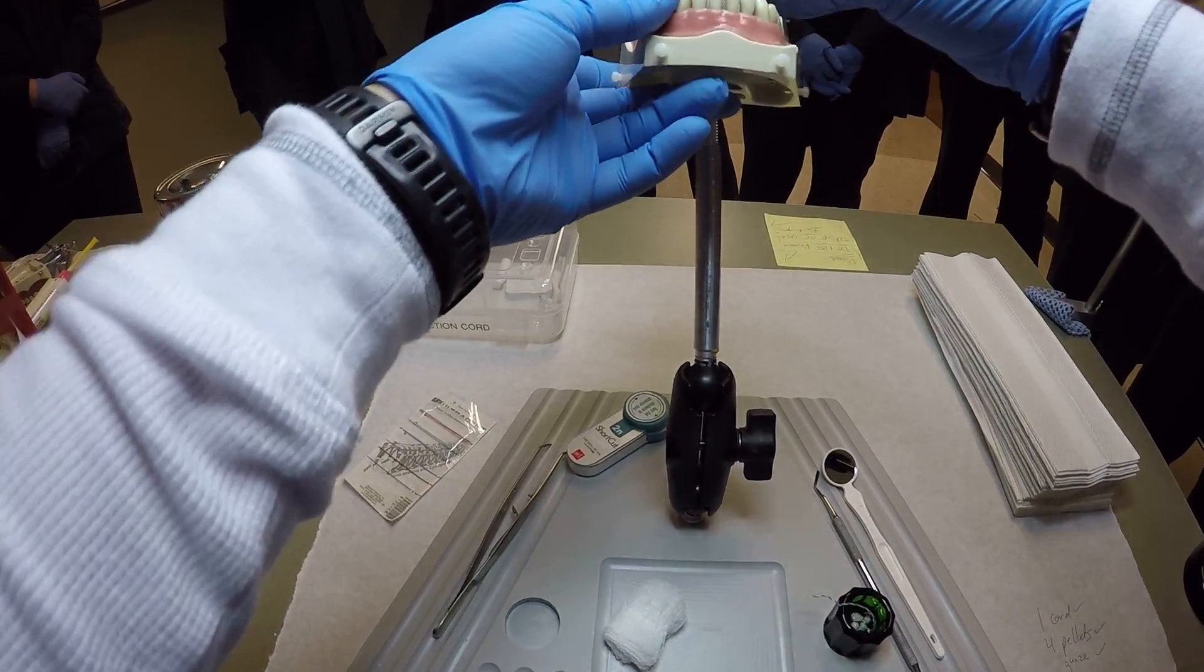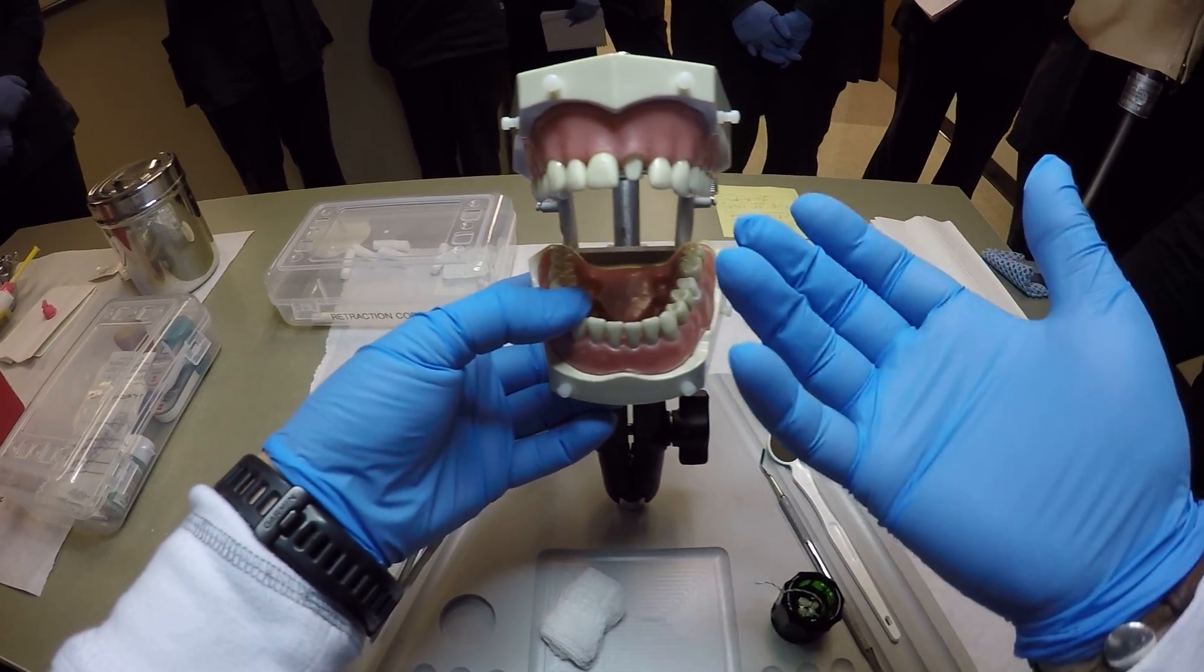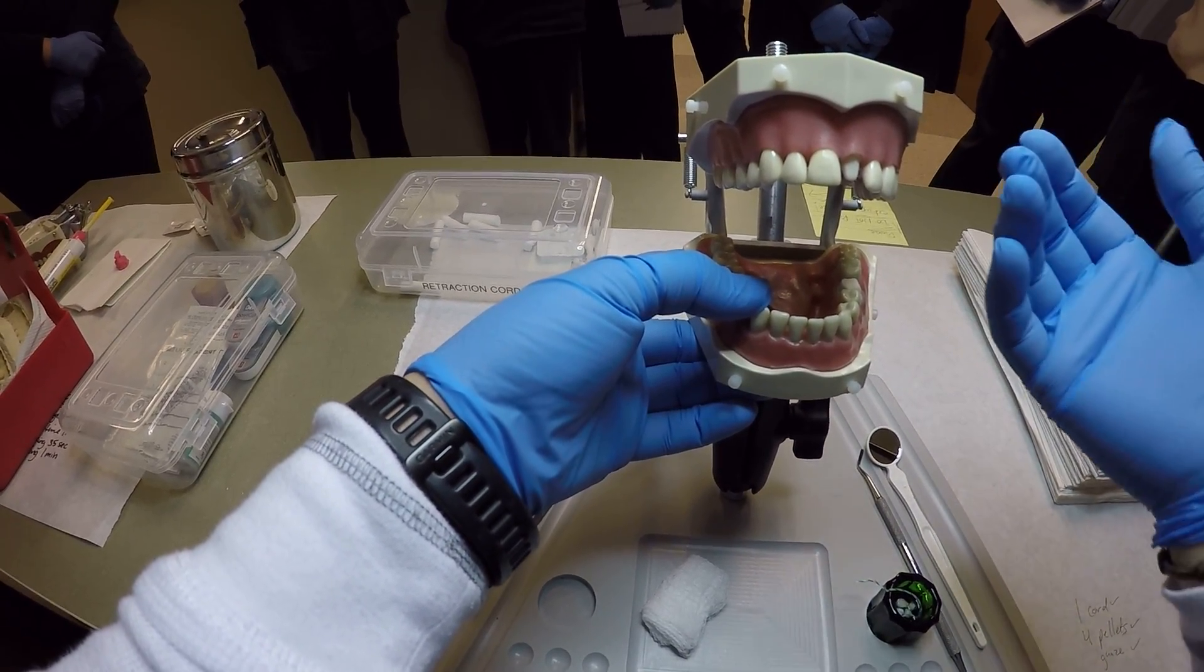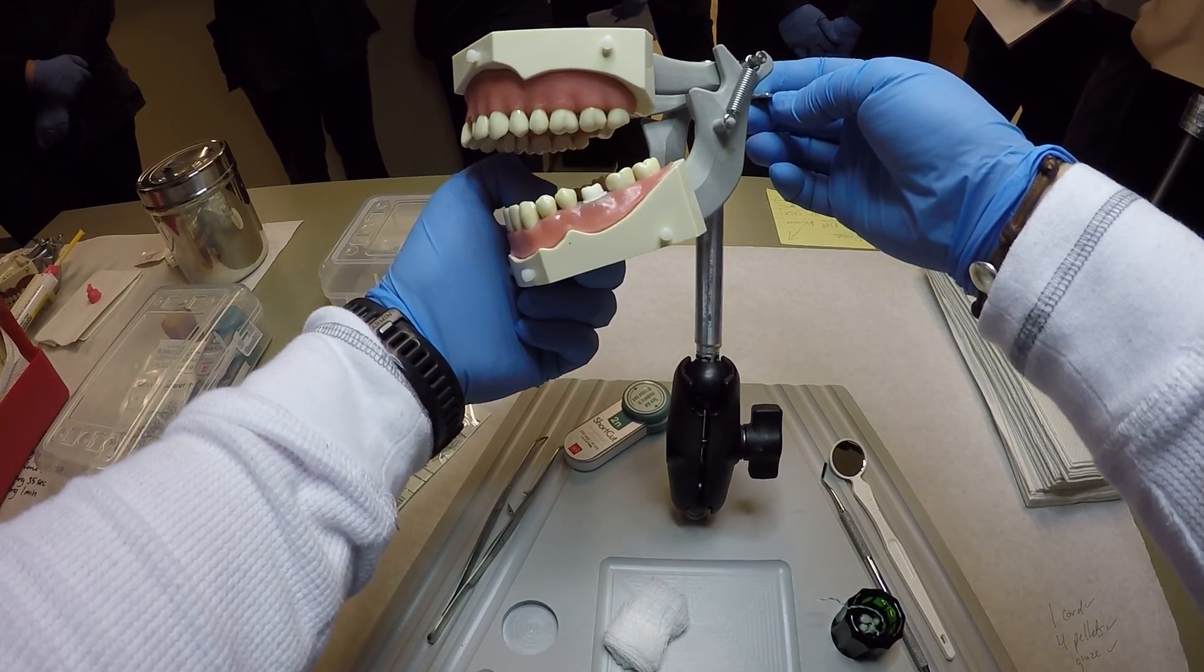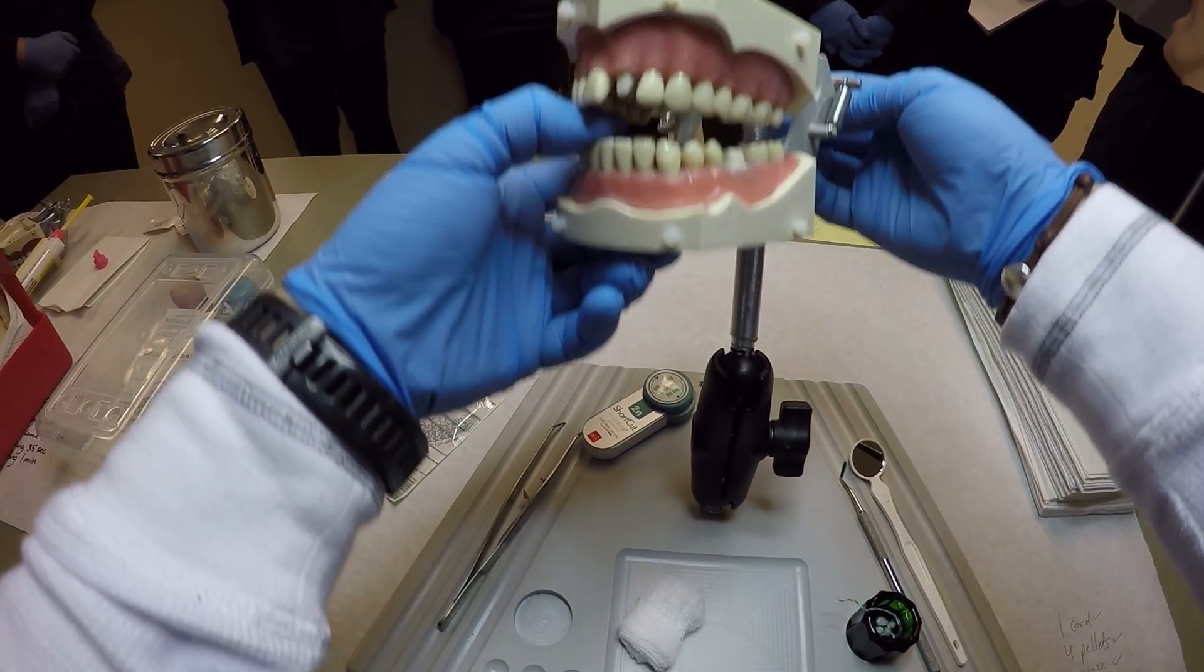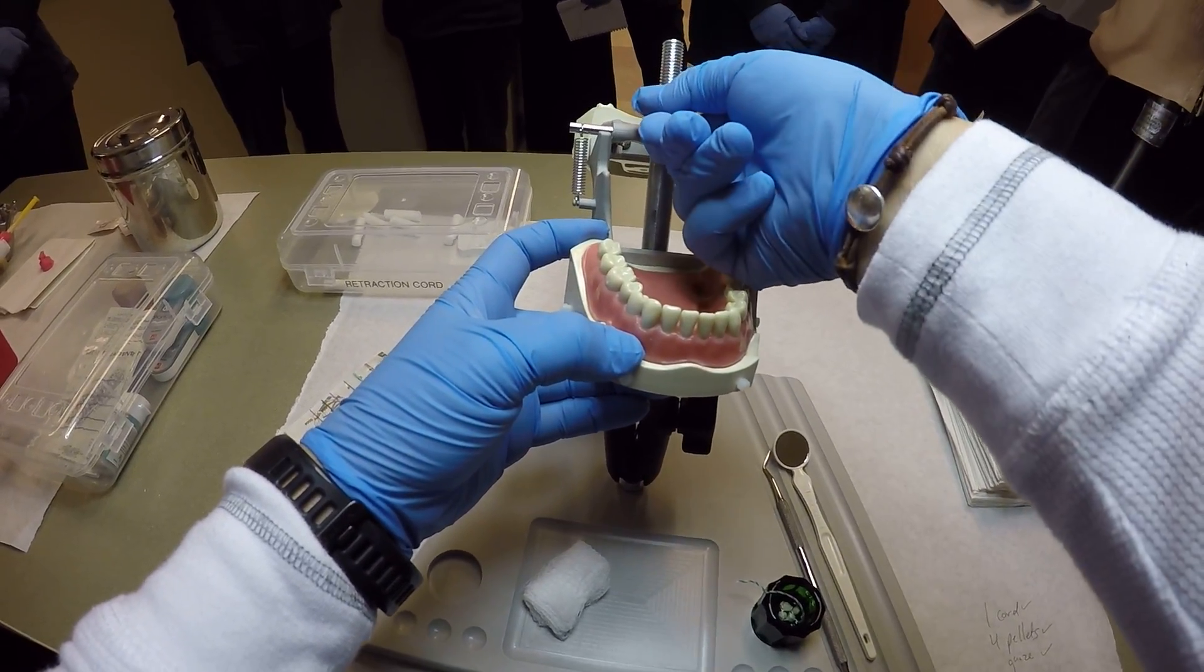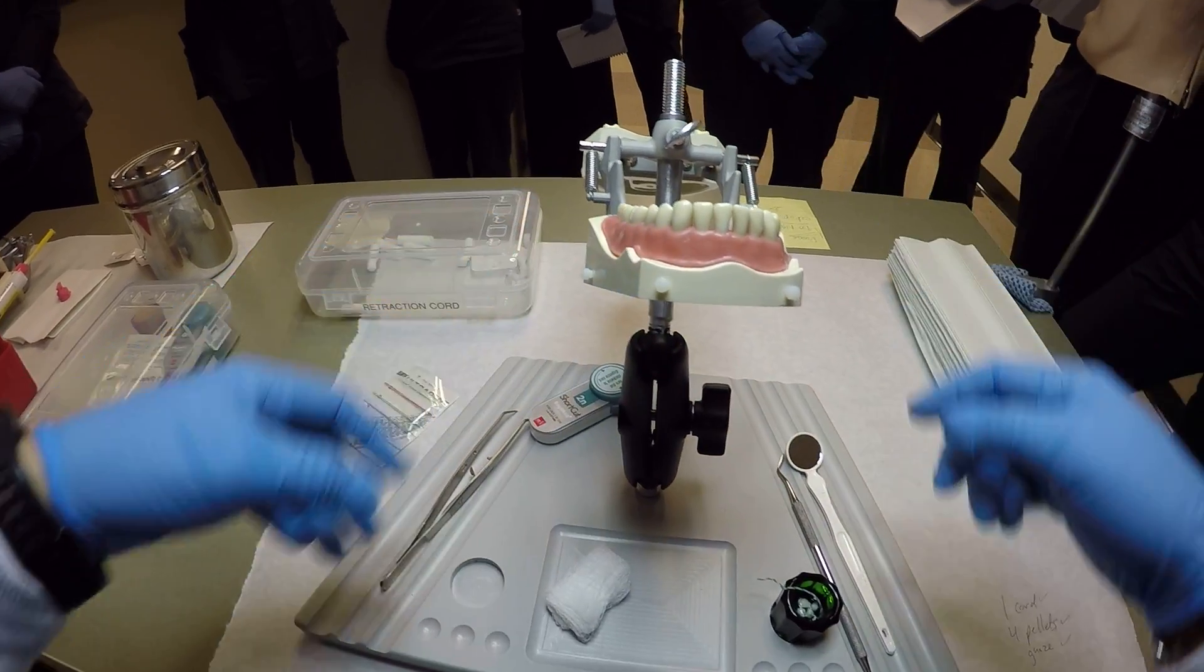Normally when you put the typodont on, you would put it on like this. This is how you would normally use it. But for demoing purposes, I'm going to have it open so that you can see what it is I'm doing. You always want to go beyond the threads when you tighten this. You do not want to tighten this right on the thread.